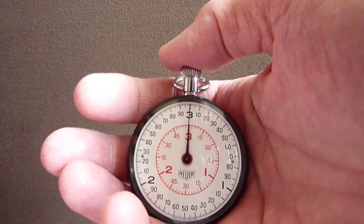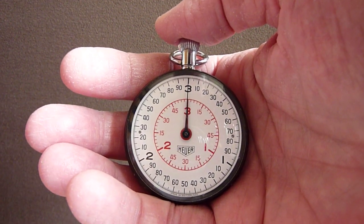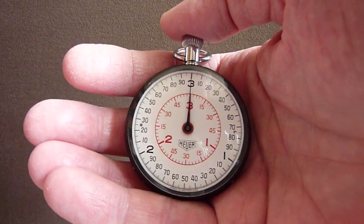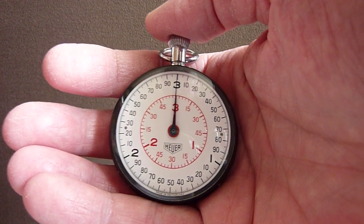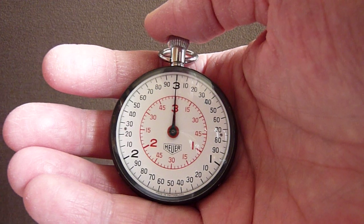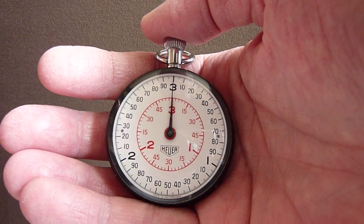As you can see, this Hoyer lap timer has two registers. The black outer register allows precision down to the hundredth of a second as one revolution of the seconds hand takes only three seconds.